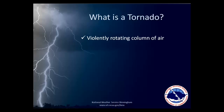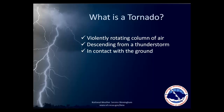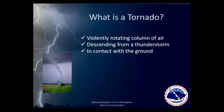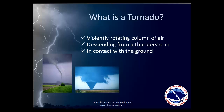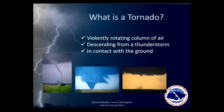The first thing we need to do is define what a tornado actually is. A tornado is a violently rotating column of air descending from a thunderstorm and in contact with the ground. They can take on all different kinds of shapes and sizes, but all will have these three attributes in common. They can be relatively thin and rope-like, or they can be large and wedge-shaped. Some are even partially invisible, with only some dust or other debris being kicked up on the ground as evidence that the tornado does indeed go all the way down to the ground.